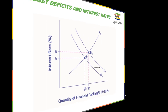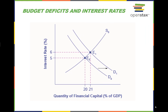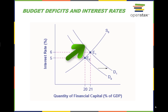This graph further illustrates the idea of crowding out from the perspective of the impact on interest rates. In the financial market, an increase in government borrowing can shift the demand curve for financial capital to the right from D0 to D1. As the equilibrium shifts from E0 to E1, the interest rate rises from 5% to 6% in this example.